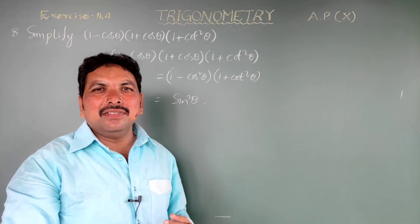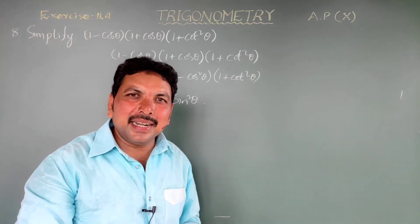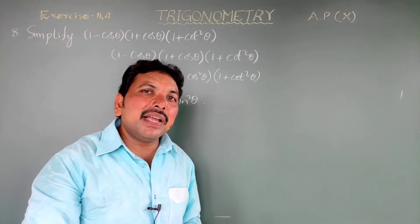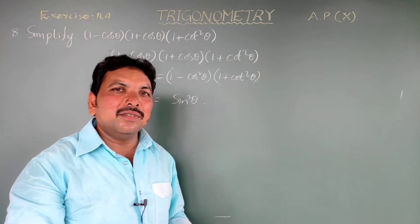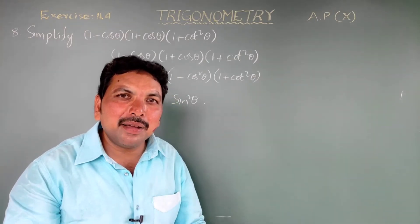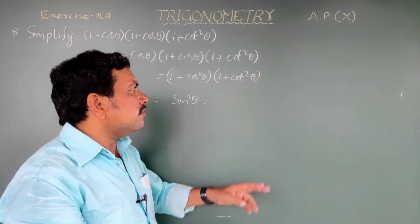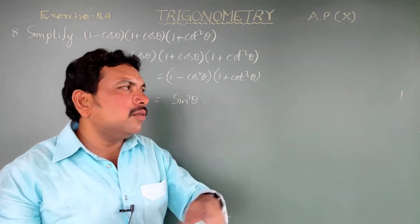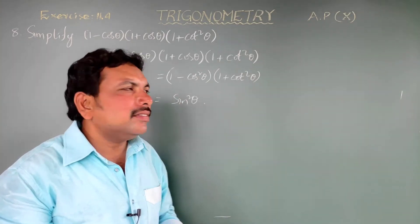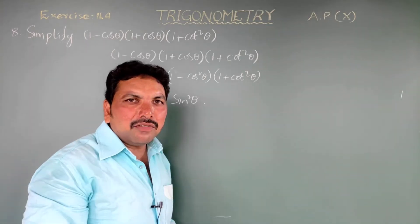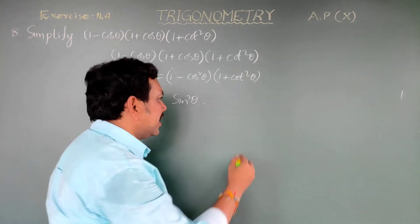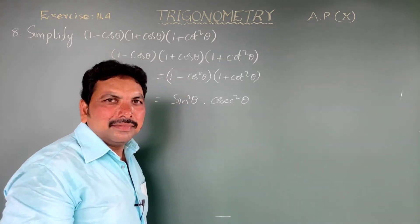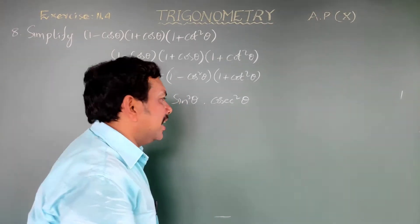For (1 plus cos square theta), we use trigonometric identity 3: cosecant square theta minus cot square theta equals 1. Rearranging, cosecant square theta equals 1 plus cot square theta. So in place of (1 plus cot square theta), we write cosecant square theta.